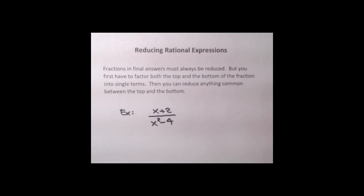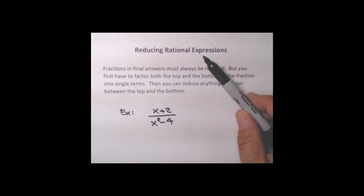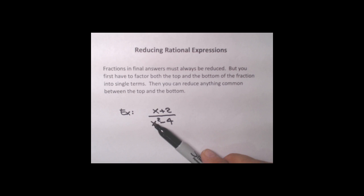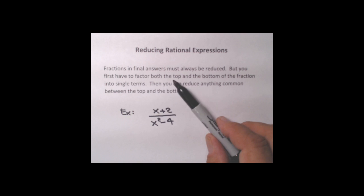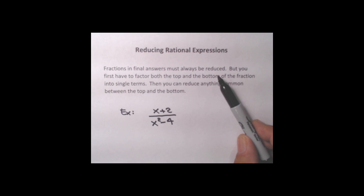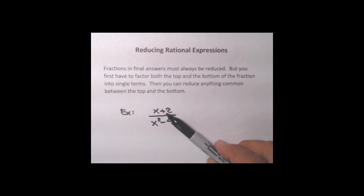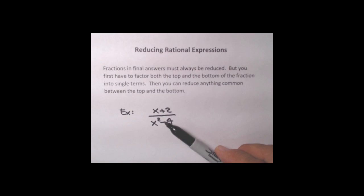Hi, I'm Adolf Oliver and this is a video clip about reducing rational expressions. Remember, rational expressions are just algebraic fractions — fractions that have variables in them besides plain numbers. There's a standing rule: fractions in final answers must always be reduced. When you have variables and more than one term, you have to factor both the top and the bottom to single terms before you can do any reducing. Reducing can only be done when both top and bottom have been factored to single terms.